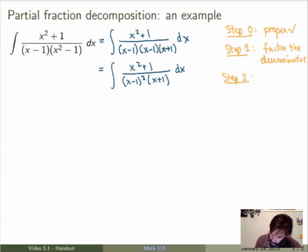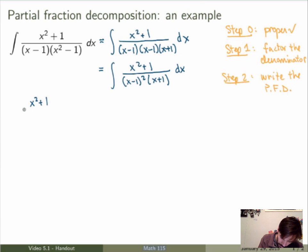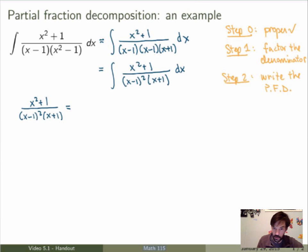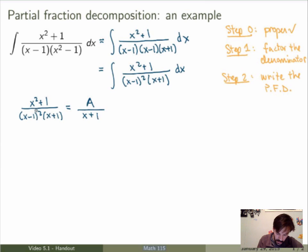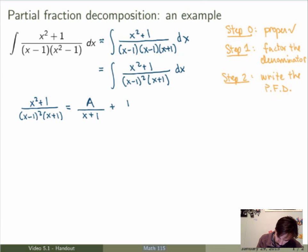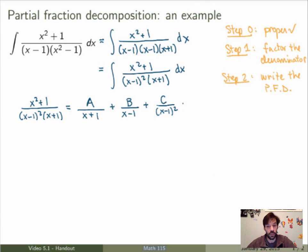Step 2 is to write down the partial fraction decomposition according to the rules from the previous video. Setting aside the integral for a moment, I look at the rational function itself. There is a simple linear factor (x plus 1), which gives a single term. The other factor (x minus 1) comes with exponent 2, so I get two terms: one with exponent 1 in the denominator and another with exponent 2. This is the partial fraction decomposition for my rational function.